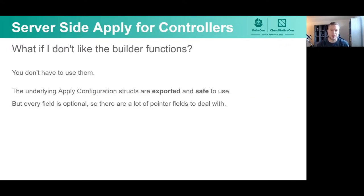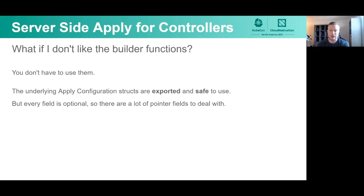If you still prefer using Go structs rather than builder functions, that's fine — you can actually use the structs. When we generated these apply configuration types, we exported all of the fields, so you can still use the fields directly. But be warned: every field is optional, there are a lot of pointers to deal with, and you might end up changing your mind and finding the builders are pretty helpful. In the future this could change — Go could add support for generics or fix support for inline pointer literals, in which case the builders might not be as useful. Since we've already exposed all the fields, you could just start using that new functionality. In that way, we've made our implementation future-proof while still trying to make things as convenient as possible for people today.